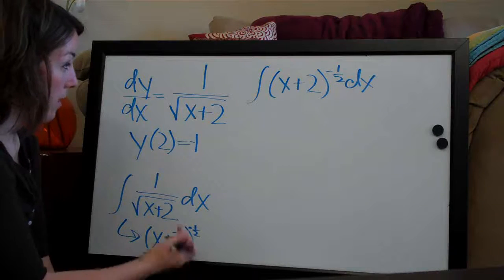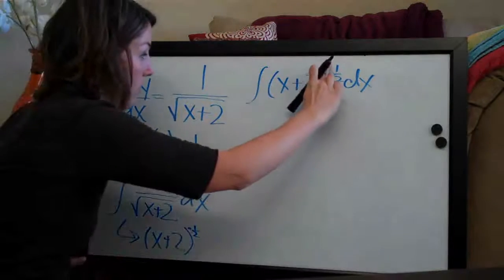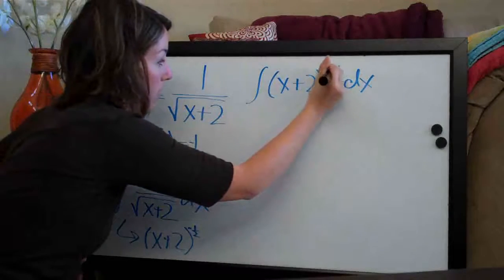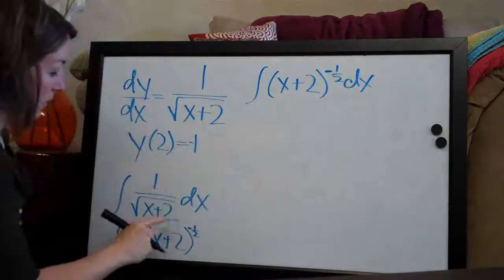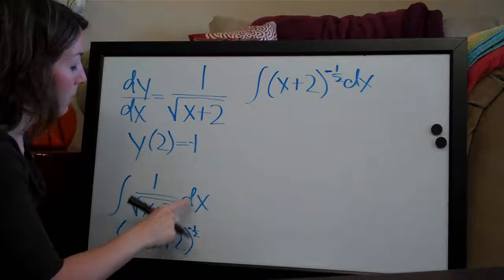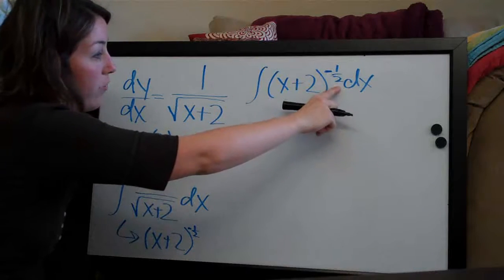And then moved it to the top by—it's a positive 1 half on the bottom and then we move it to the top so we change it to a negative 1 half.